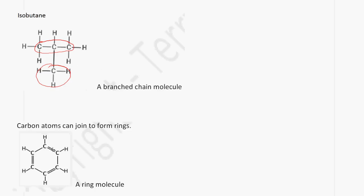Carbon can also join to form rings. For example, these six carbon atoms join to form a ring molecule. In this case this is benzene.